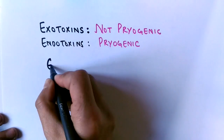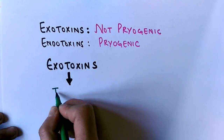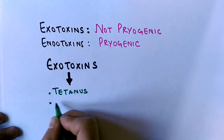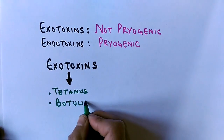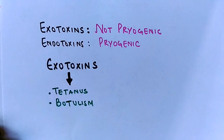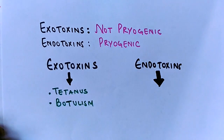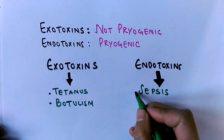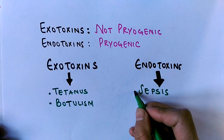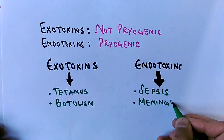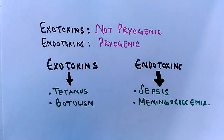Exotoxins cause diseases such as tetanus, caused by Clostridium tetani, and botulism, caused by Clostridium botulinum. On the other hand, endotoxins cause sepsis, caused by Pseudomonas aeruginosa, and meningococcemia, caused by Neisseria meningitidis.